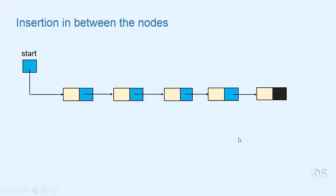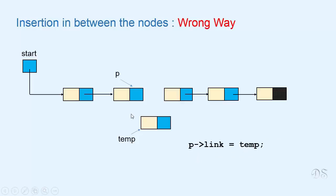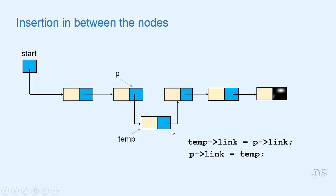To insert a new node between two nodes, we need a pointer to the first of those two nodes. We allocate the new node, then write temp->link = p->link (making temp's link point to the node after p), and then p->link = temp (making p's link point to the new node). The order matters: if you first write p->link = temp, then temp->link = p->link makes temp point to itself and the link to the rest of the list is broken.